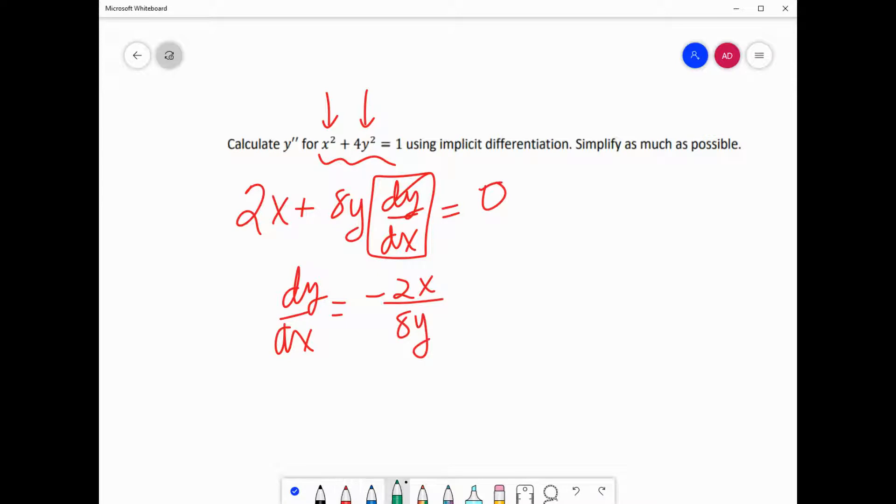All right, so what did I do? Well, I brought the 2X over, and then, of course, I divided by 8Y. Okay, if this is a little bit going fast, guess what you could do? Pause this and go back. I know, crazy thought. So that's going to give me DYDX is actually equal to negative X over 4Y. All right, so you're not too scared about that. I know this little DYDX thing is a little sloppy, but you'll get used to it.